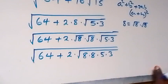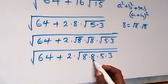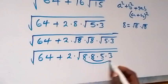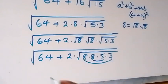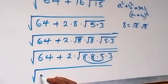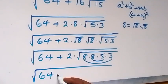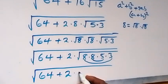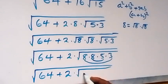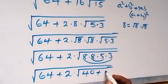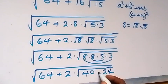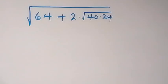Let's group this together as 8 times 5 and 8 times 3. This gives us the square root of 64 plus 2 times root(8×5) times root(8×3), which is 2 times root 40 times root 24.